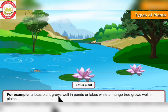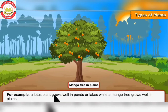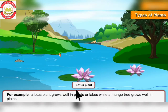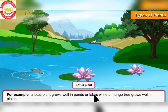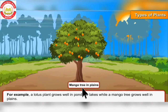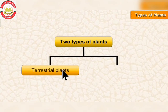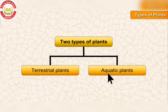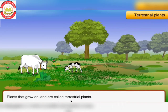For example, a lotus plant grows well in ponds or lakes, while a mango tree grows well in the plains. Plants can be of two types: first is terrestrial plants and second is aquatic plants. Plants that grow on land are called terrestrial plants.